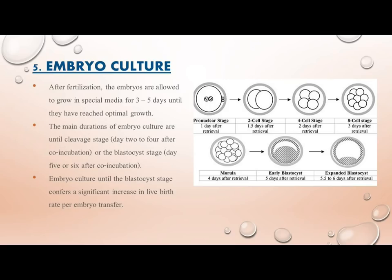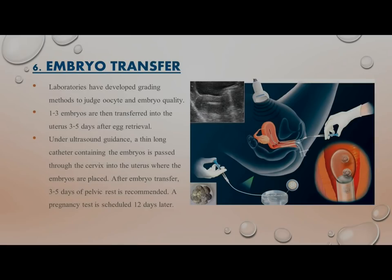Embryo culture durations are either until the cleavage stage (day 2–4 after co-incubation) or the blastocyst stage (day 5–6 after co-incubation). Culturing until the blastocyst stage confers a significant increase in live birth rate per embryo transfer. Step 6 — Embryo Transfer: laboratories use grading methods to judge oocyte and embryo quality. One to three embryos are then transferred into the uterus 3–5 days after egg retrieval under ultrasound guidance using a thin catheter passed through the cervix. After transfer, 3–5 days of pelvic rest is recommended, and a pregnancy test is scheduled 12 days later.